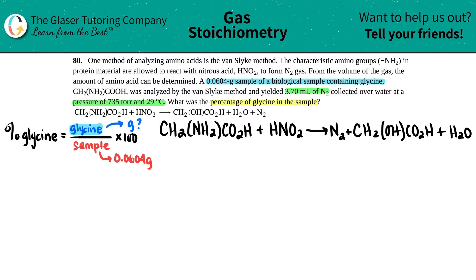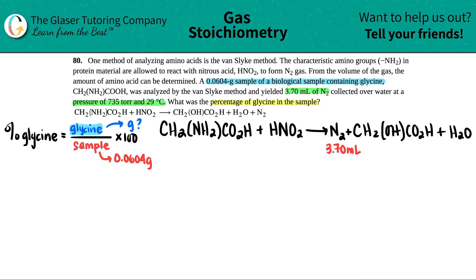Now let's list what we're given. We yielded 3.70 mils of N2, so we know information about this compound. We know that we have 3.70 mils of N2, and this was collected over water at a pressure of 735 torr and at a temperature of 29 degrees Celsius. So I have a volume for N2, and then they're telling me that it corresponds with this pressure and temperature.